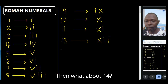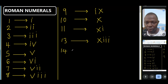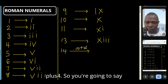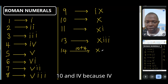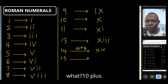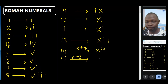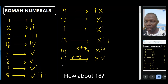What about 14? Fourteen is 10 plus 4, so you write X and IV, because IV is 4. Fifteen is 10 plus 5, so that's X and V.